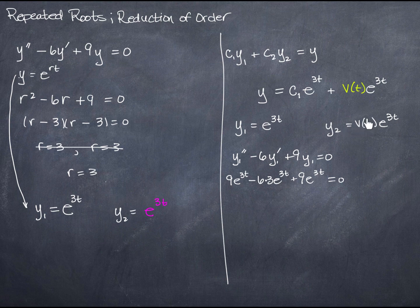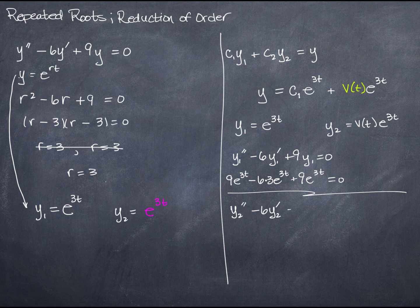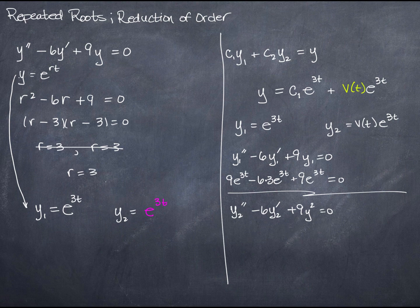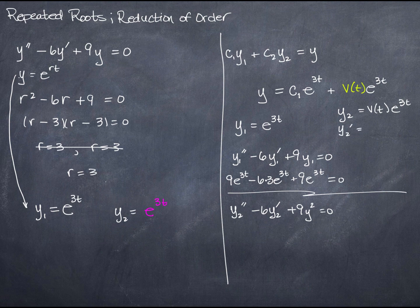But we need to find the function v. In order to figure out what v might be, we need y2 to satisfy y2'' minus 6y2' plus 9y2 equals zero. Since v is unknown, we'll plug in our assumed form y2 = v·e to the 3t, compute its derivatives, and force the equation to equal zero to find v. So let's take y2's first derivative using the product rule: v times the derivative of e to the 3t, which is 3e to the 3t, plus e to the 3t times v'. That gives 3v·e to the 3t plus v'·e to the 3t.